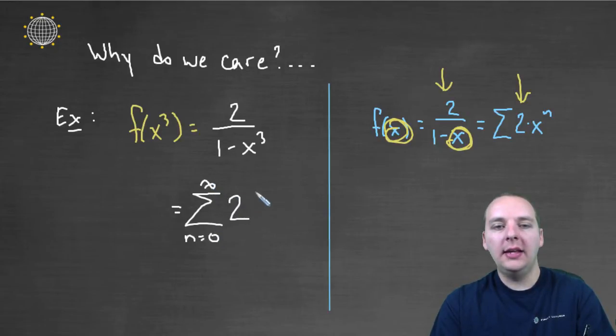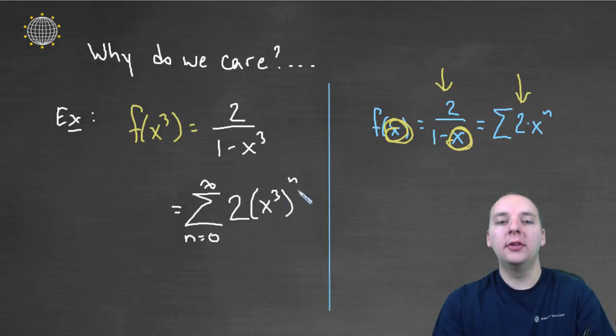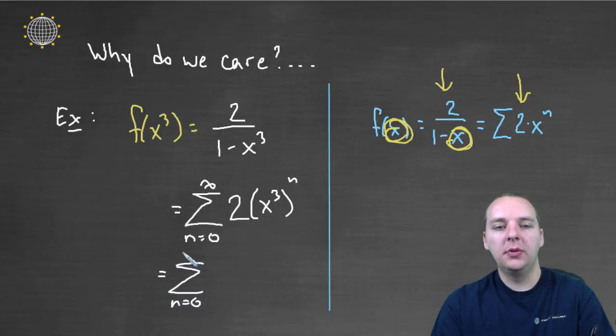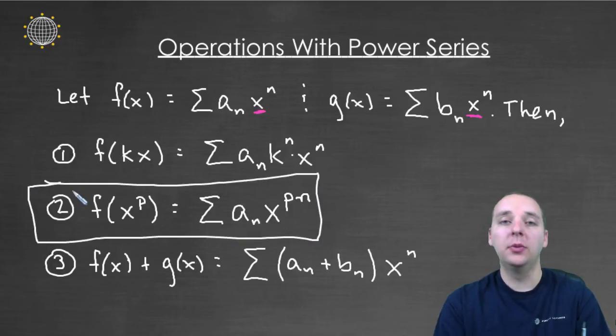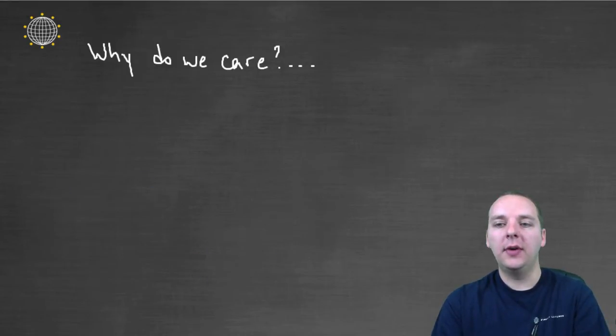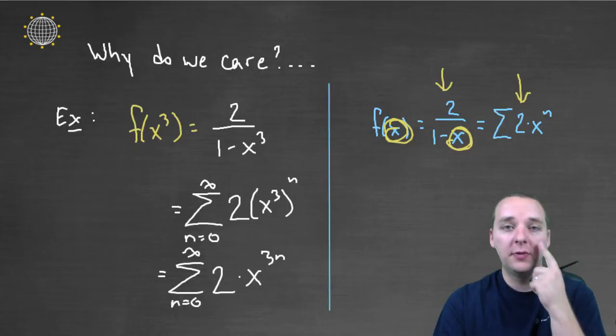of a times r^n. But this would be x³ to the n, which would make this the sum n equals zero to infinity of 2x^(3n), right? Which is exactly what this property back here said. This was actually the property number two that we're using right here. So these properties here can really help when you try to find the power series for certain functions.